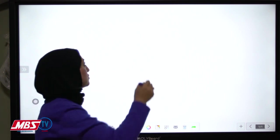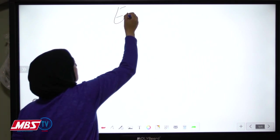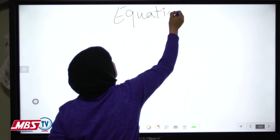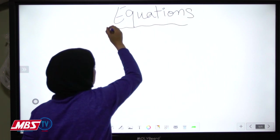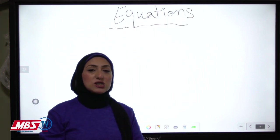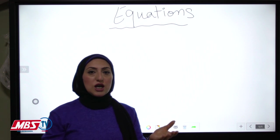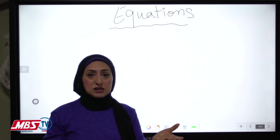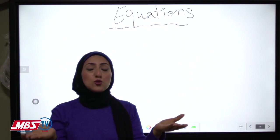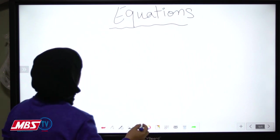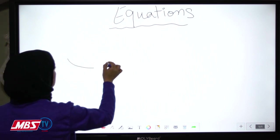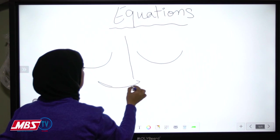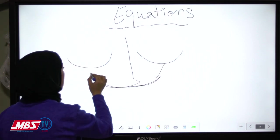What is the meaning of equation? Equation comes from equality. Equality means the two pans of a balance should be equal. For example, this is a pan and this is a pan — and this is an equation.